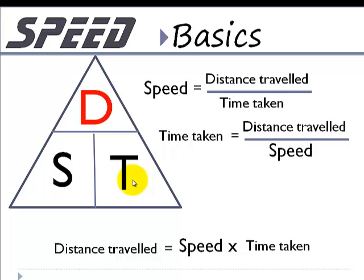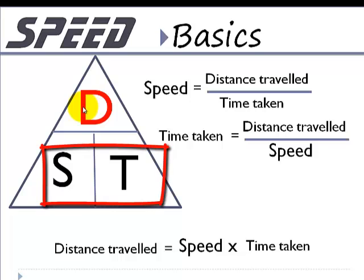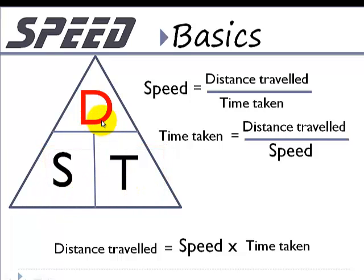To remember the relationship and what goes where in the triangle, we can use a simple guide. D comes first before s and t in alphabetical order, so we place d on top. Then s and t come consecutively in the same order, so we put them one after the other below. Once we form this triangle and write d, s and t in the appropriate places, it becomes easier to establish the relationship between speed, distance and time.